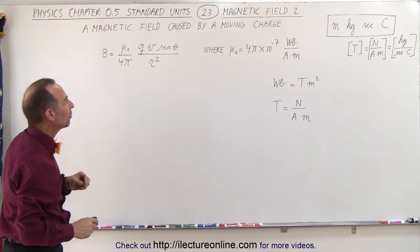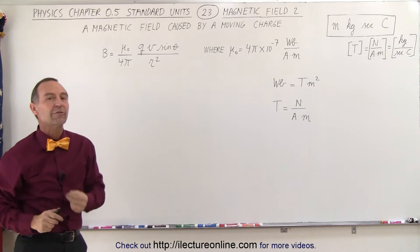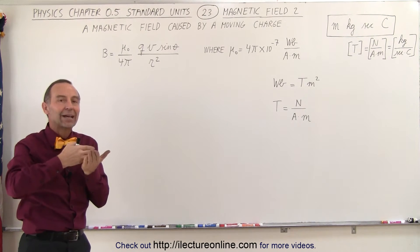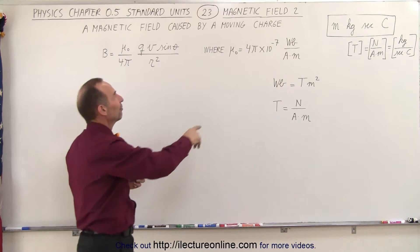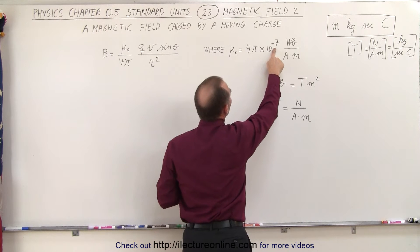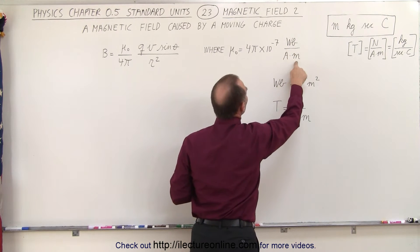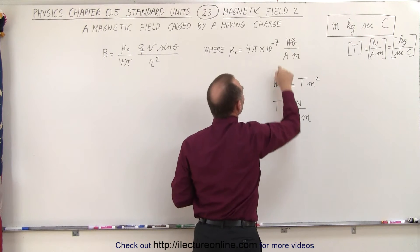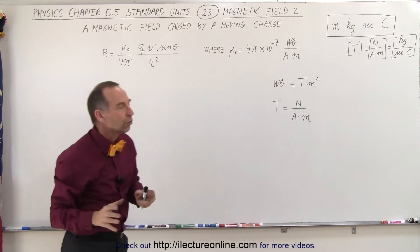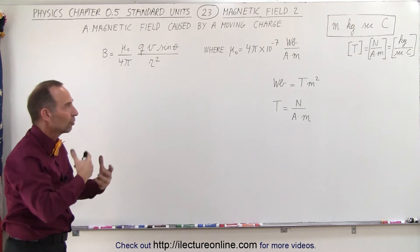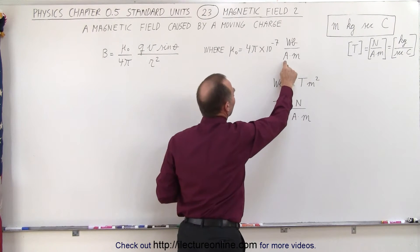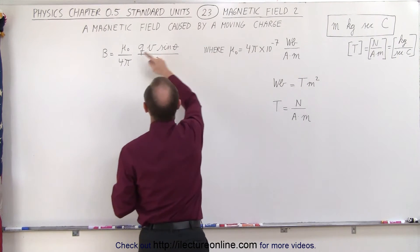Mu sub nought is what we call the permeability of free space — the relationship of how magnetic fields act throughout space. It is defined as 4 pi times 10 to the minus 7, Webers per amp times meter. Weber is defined as Teslas times square meters, which are the units for magnetic flux. So there's a relationship between the magnetic flux and the current which causes the magnetic field.